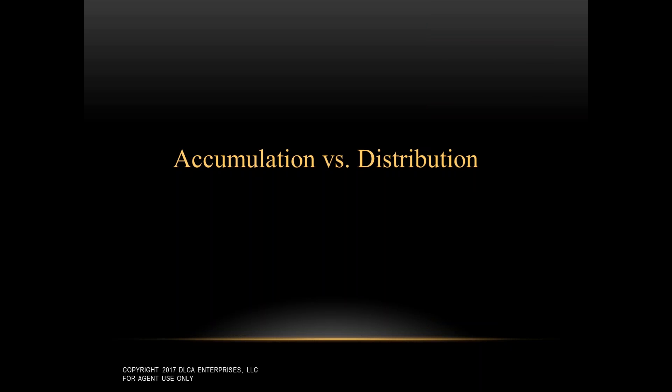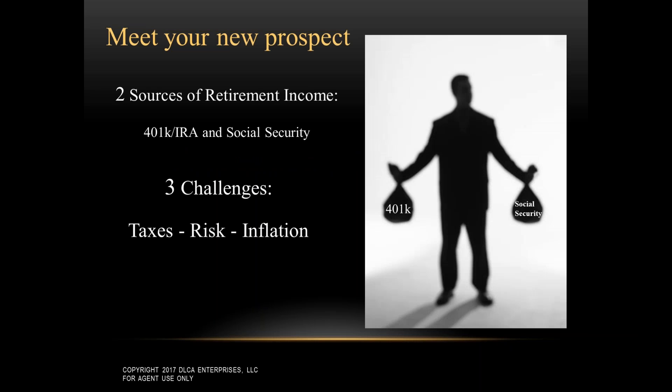Let's talk about accumulation versus distribution. During the accumulation phase, life was very simple for the consumer — they had three considerations: am I eligible to contribute, how much can I contribute, and where do I put the money? This was an IRS payday — they were getting a tax deduction on contributions and employer matching funds. But when they retire or turn 70 and a half, they're forced to take distributions, and the Internal Revenue Code is strewn with landmines that can be very costly and often irreversible.